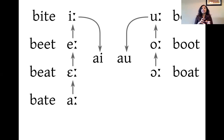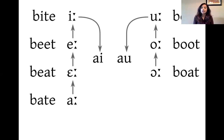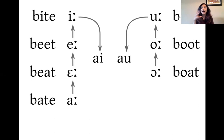On the other side you have 'boat', which was pronounced as 'boat' in Middle English, which became 'boot' — so 'boat' then became 'boot' with the 'oo' sound — and then the 'ow' diphthong.